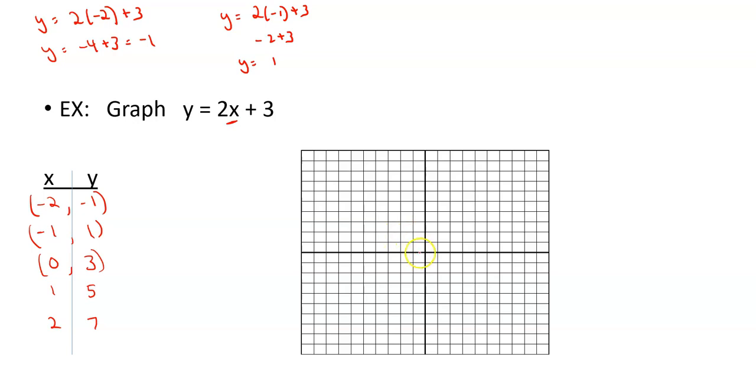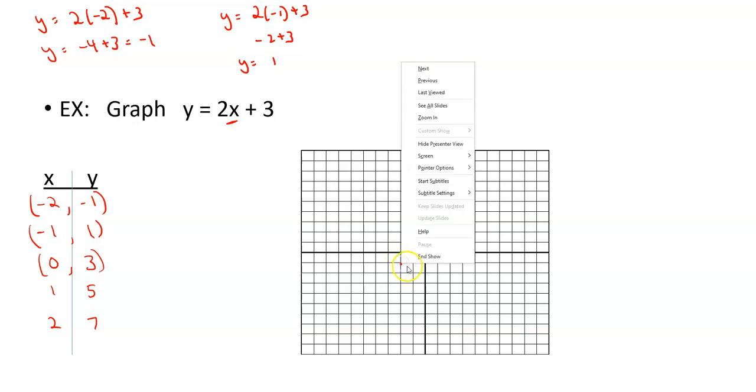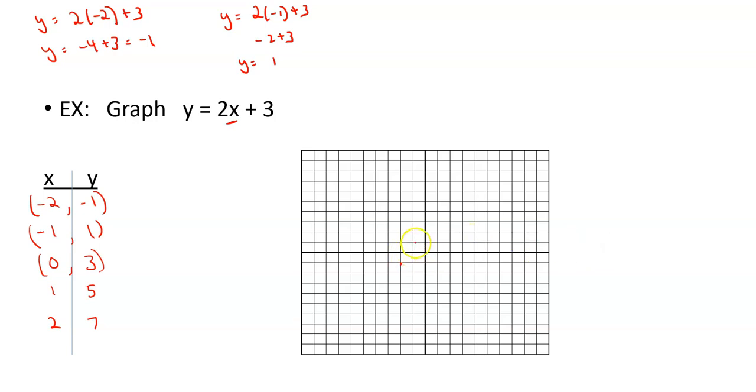Over to this graph here. Where is (-2, -1)? We always start at the origin. 2 to the left, 1 down, there's a point. 1 to the left, 1 up, there's another point. (0, 3) is on the axis. (1, 5) is up here. (2, 7) is over here. I'm not drawing this on a tablet where I can see where I'm graphing, so I can't use a ruler. You should. I'm going to give it my best shot to draw a straight line. There's my rough graph of y equals 2x plus 3.